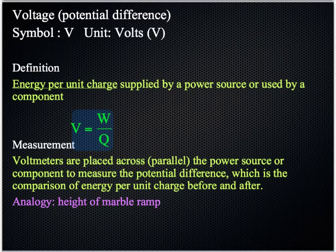When you're measuring voltage or potential difference we use a voltmeter. And these are always placed across or in parallel to the power source or the component that you are measuring. And so this potential difference, the word difference gives you a hint. It really is the comparison of energy per unit charge before and after the component in the circuit. The analogy is the height of a marble ramp. You'll see this demonstrated in class. So you'll be able to add a note to that to make sense of it.